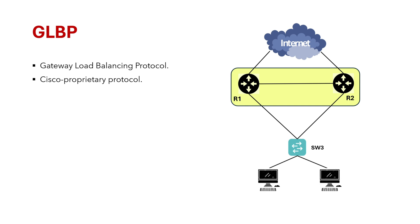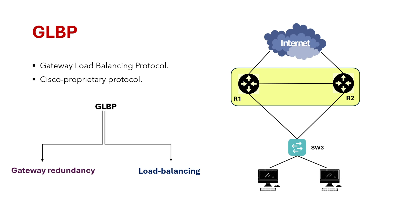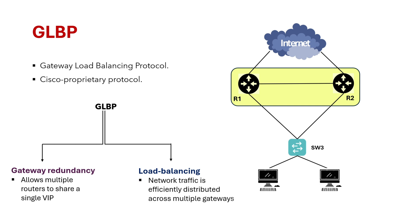As the name suggests, GLBP provides both gateway redundancy and load balancing capabilities. By gateway redundancy, it allows multiple routers to share a single virtual IP address, ensuring seamless connectivity. It also ensures that network traffic is efficiently distributed across multiple gateways.